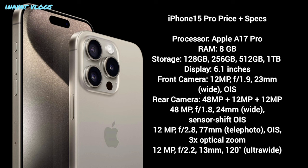There are three rear cameras: 48 megapixel and two 12 megapixel cameras. The 48 megapixel is f/1.8, 24mm wide with sensor-shift OIS for stabilization. The second camera is 12 megapixel, f/2.8, 77mm telephoto with OIS and 3x optical zoom — compared to 5x optical zoom on the iPhone 15 Pro Max, which is the key difference between them.